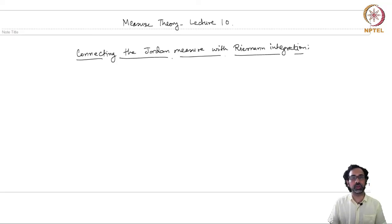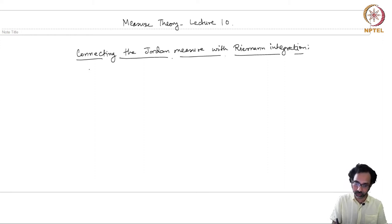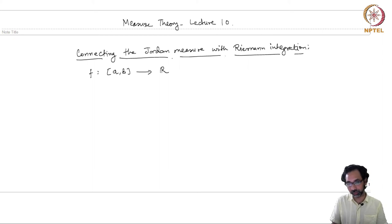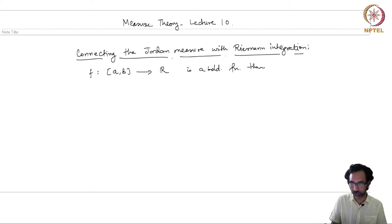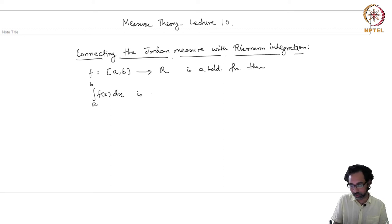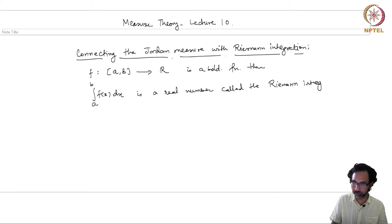Now that we have seen many examples of Jordan measurable sets, the last topic that we will cover under Jordan measures is its deep connection with the theory of Riemann integration. So let us recall the definition of a Riemann integral of a function. If f is a bounded function defined on an interval a, b to the real numbers, then one can define the Riemann integral from a to b of f(x) dx, which is a real number called the Riemann integral of f.